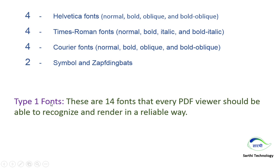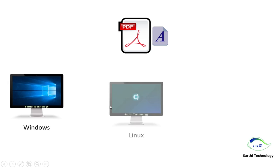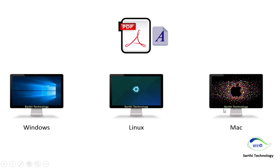Now let's talk about embedded fonts. For example, you are creating a PDF and you are attaching a font that you want to use in the PDF. In that case, if you open the PDF in Windows, Linux, Mac, or any other platform like Android, the PDF will show the same font on each platform because this font is attached with the PDF. So this is the story of Type 1 fonts and embedded fonts.